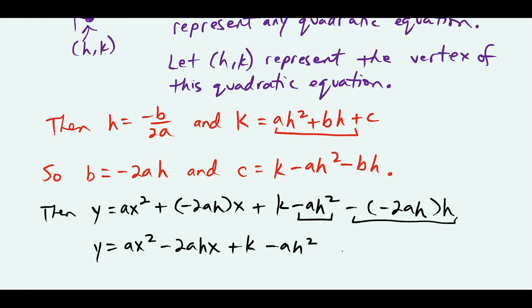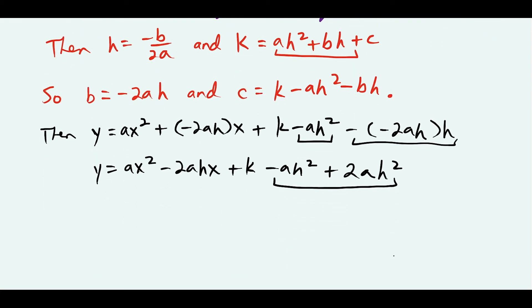And here I have minus minus, which changes to plus. And I have two times a, and then h times h is h squared. So these two last terms are like terms, so I can combine them.